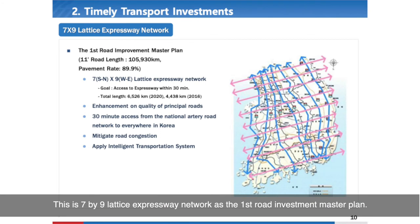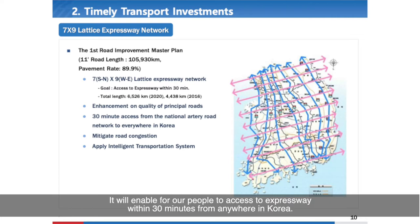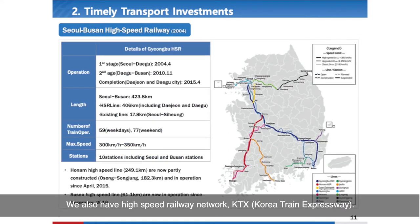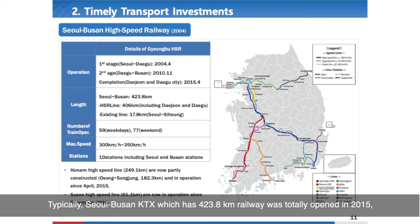This is the 7x9 lattice expressway network as the first road investment master plan. It enables people to access an expressway within 30 minutes from anywhere in Korea. Korea also has a High Speed Railway Network. The Seoul-Busan KTX line, with 423.8 km of railway, was fully opened in 2015.